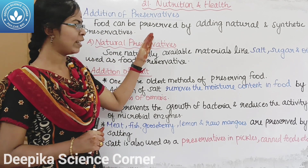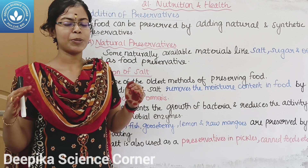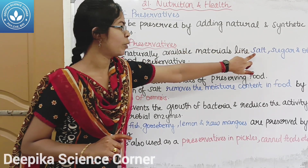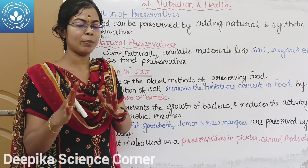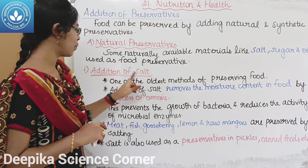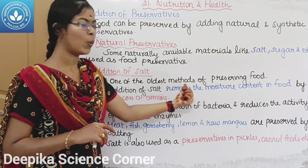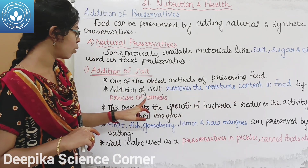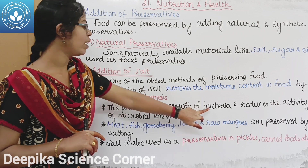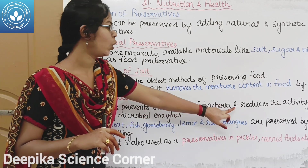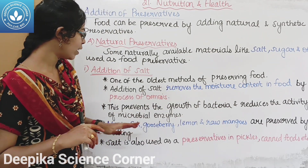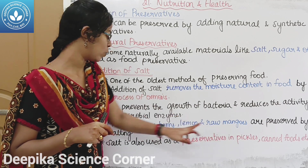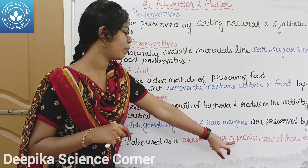The eighth method is addition of preservatives. Natural preservatives include salt, sugar, and oil. Salt is one of the oldest methods — it removes moisture content through osmosis and reduces the activity of microbial enzymes, stopping and preventing their growth. Salt is used for preserving meat, fish, gooseberry, lemon, and raw mangoes, and is also used in pickles and canned foods.